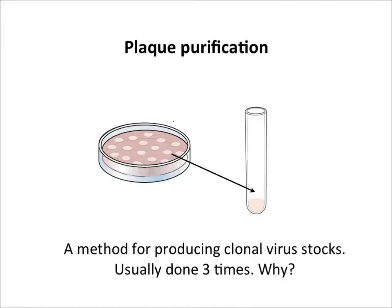Another reason for the plaque assay is to clonally purify virus populations. You do a plaque assay, leave the agar overlay on so everything stays alive, find a plaque, insert a pipette through the agar, and the little plug of agar will have virus in it — that's plaque-purified virus. We repeat this three times: pick a plaque, replate it in a new plaque assay, pick another plaque, and do it again. That ensures clonal populations, though as we'll learn later, even a plaque contains huge genetic diversity, especially in RNA viruses.